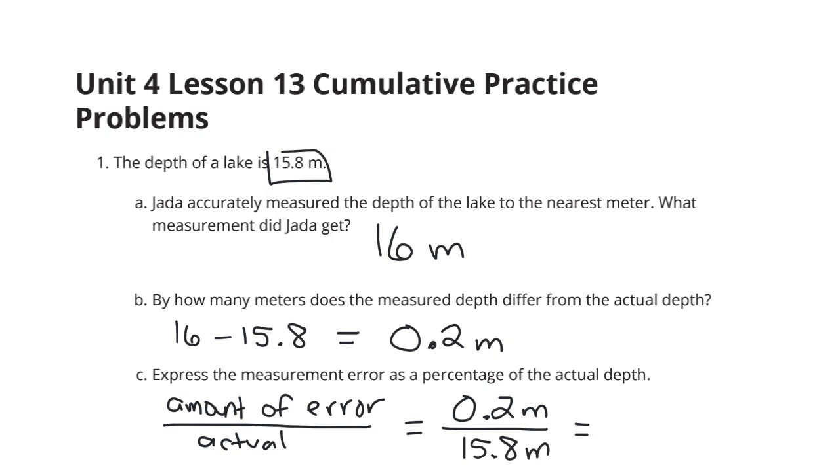And so our amount of error was 0.2 meters. The depth of the lake is actually 15.8 meters. And when we take 0.2 and divide it by 15.8, we're going to end up with a fun decimal here.